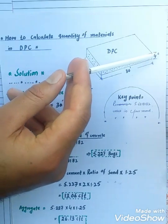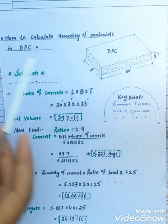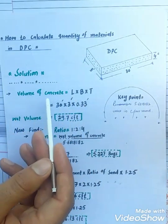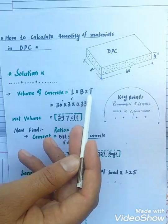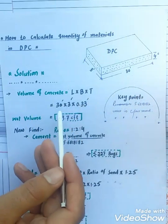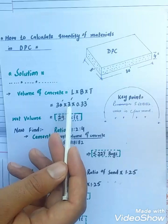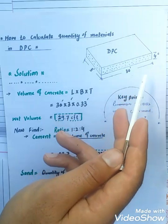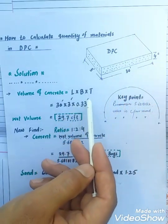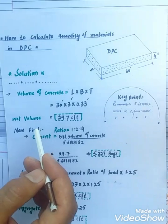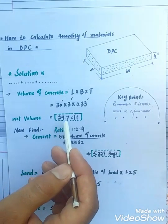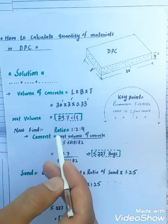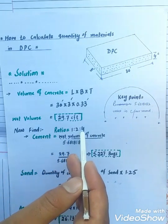Now let's start the solution. First of all, we need to find the volume of concrete: length multiply by breadth multiply by thickness of DPC. Length is 30 feet, multiply by 3 feet this is the breadth of DPC, multiply by thickness of DPC this is 4 inch or 0.33 feet. The wet volume is equal to 29.7 cubic feet.